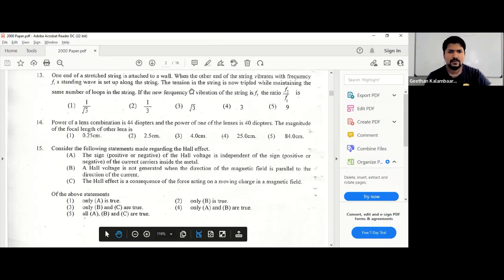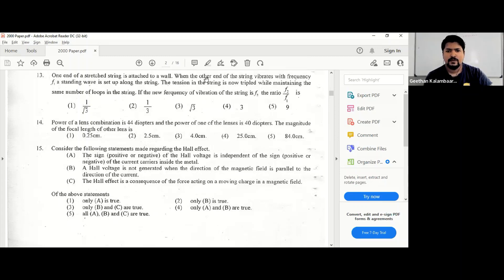One end of a stretched string is attached to a wall when the other end of the string vibrates at frequency f', a standing wave is set up along the string. The tension of the string is now tripled while maintaining the same number of loops in the string. The new frequency of vibration of the string is f2. We'll have to draw diagrams for this.